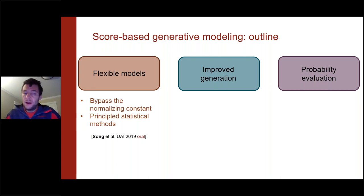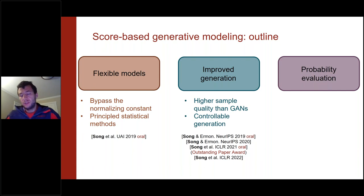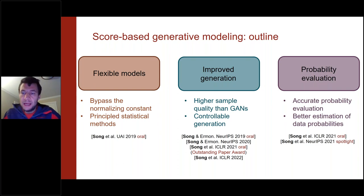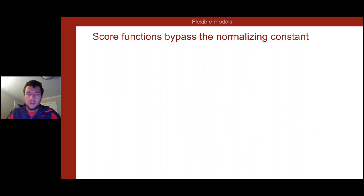Working with the score function allows for principled statistical methods for training from data. It allows generating very high-quality samples that can be controlled using text, sketches, or other conditioning signals to steer the generation process. As we will see, it also allows evaluating probabilities exactly, unlike generative adversarial networks.